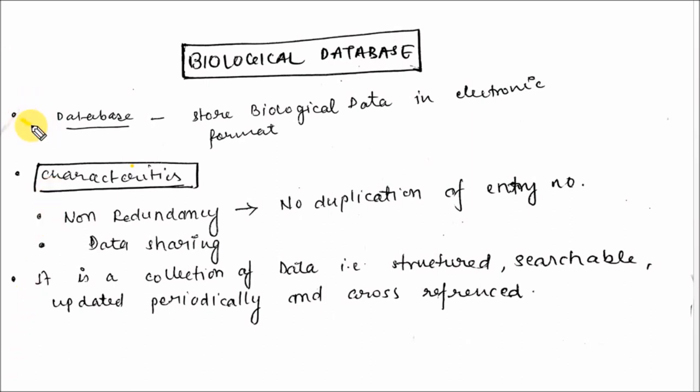What is database? Database is the storage of biological data in electronic format. The characteristics of biological databases include non-redundancy, meaning no duplication of entry numbers, and data sharing, meaning these biological databases can be shared by various institutes like NCBI, EMBL, or DDBJ.